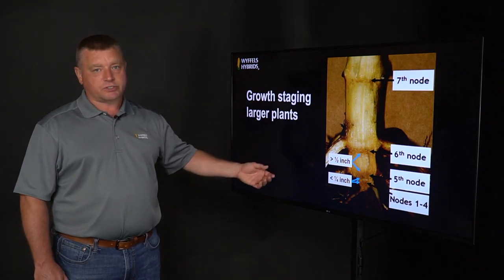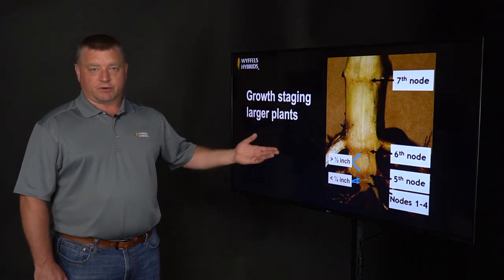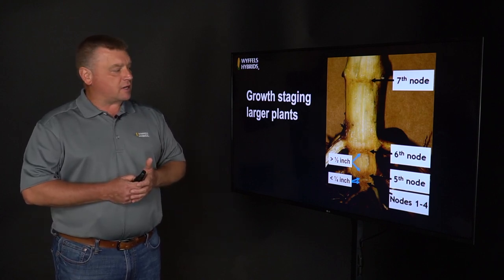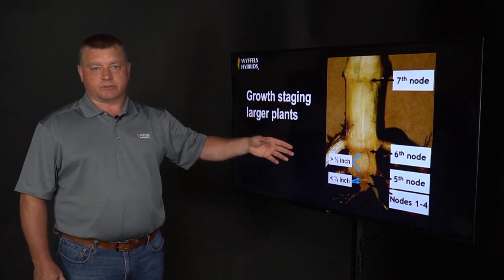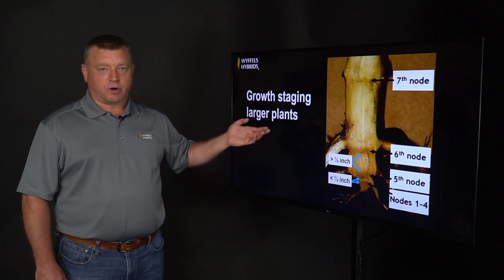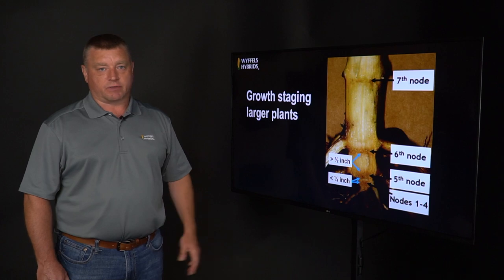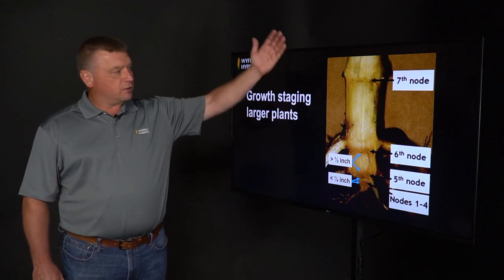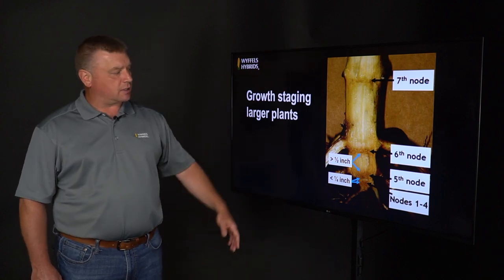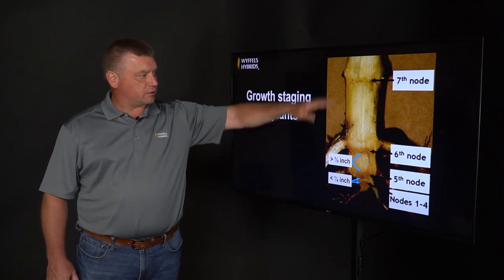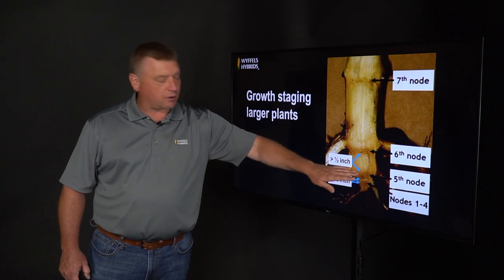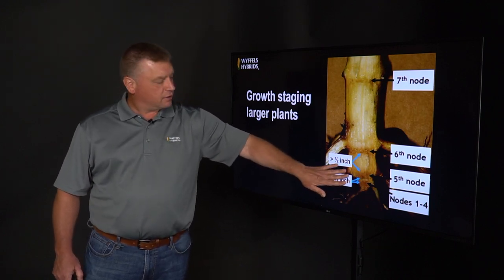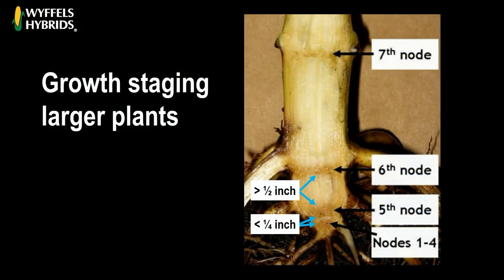As we move beyond the V6 stage, it gets a little more difficult to identify the V stage of the corn plant. As the corn plant grows and the stalk expands, we'll start to lose leaves — it's not uncommon for the first four leaves to be missing from a tasseled corn plant. So from V6 on, you'll need to dig up the plant, split it down the middle, and look for these lines, which are the nodes. You're looking for the space between the lines. Here in the crown of the plant is an inverted triangle — often slightly off-color and more hardened tissue — and that is the first four nodes of the corn plant compressed together.